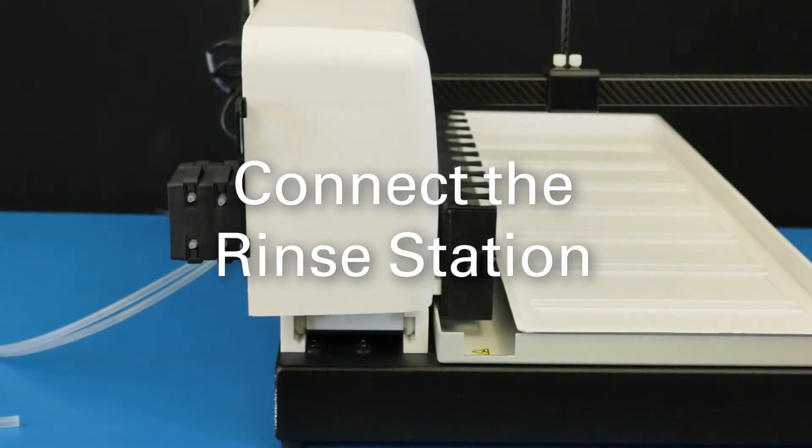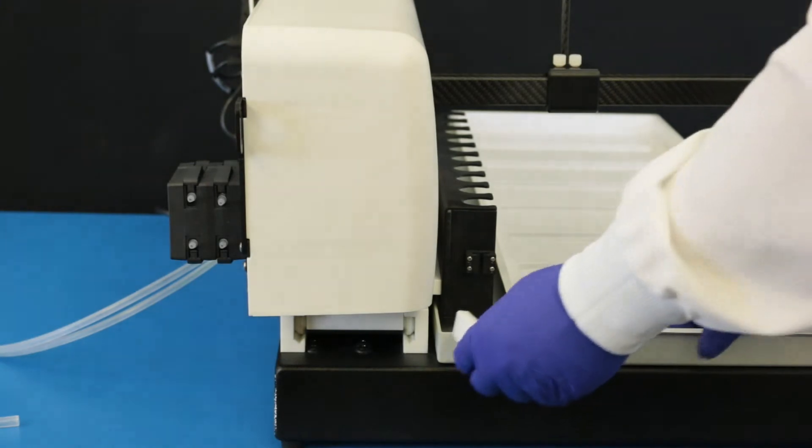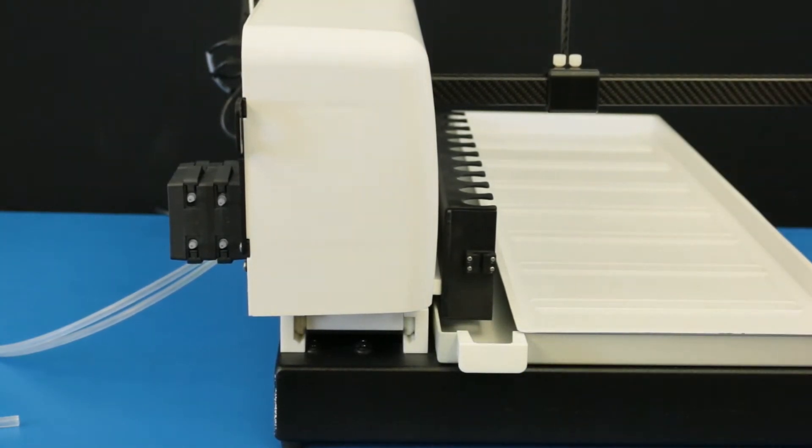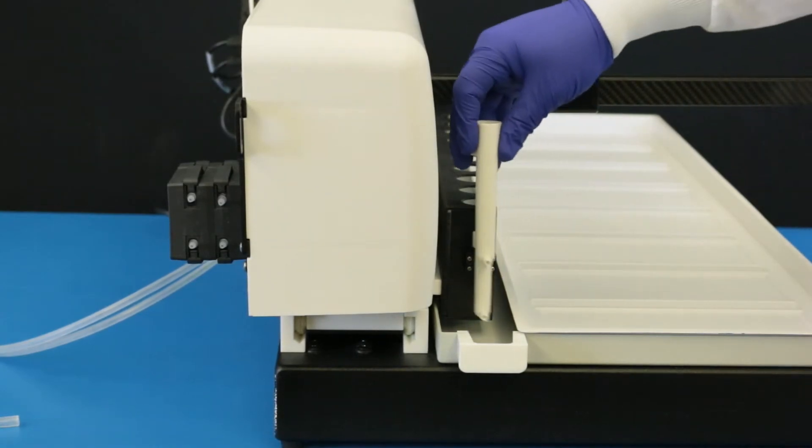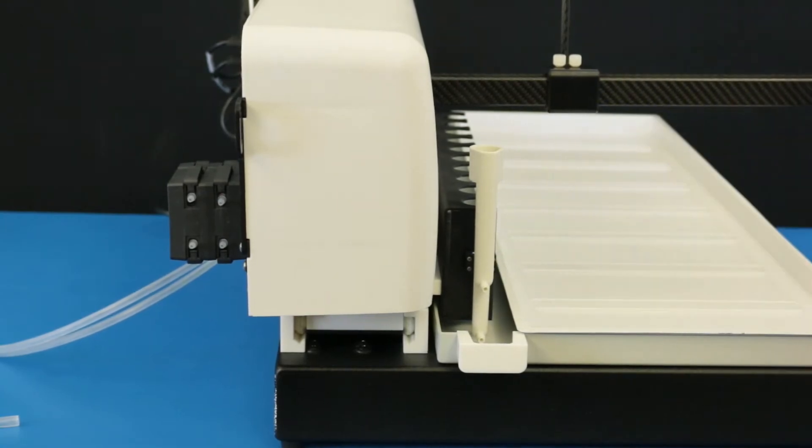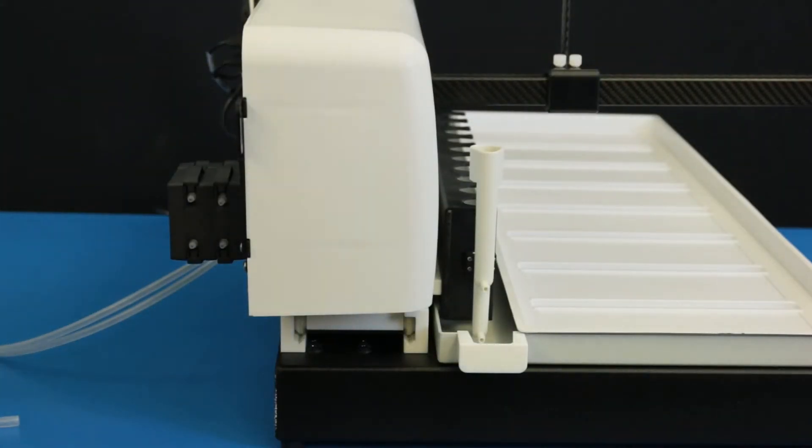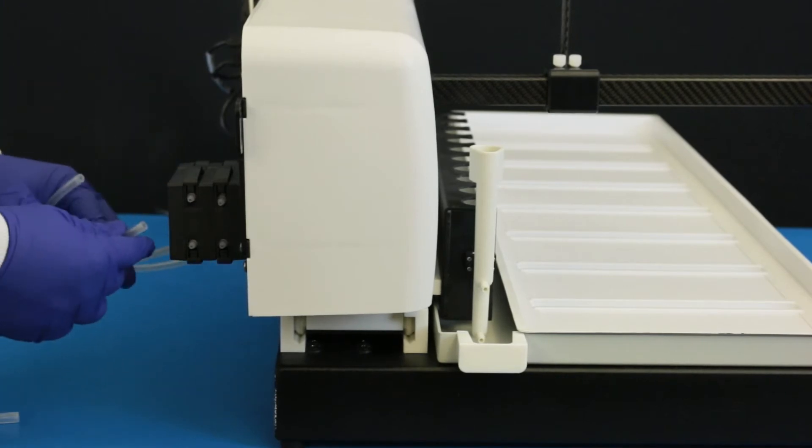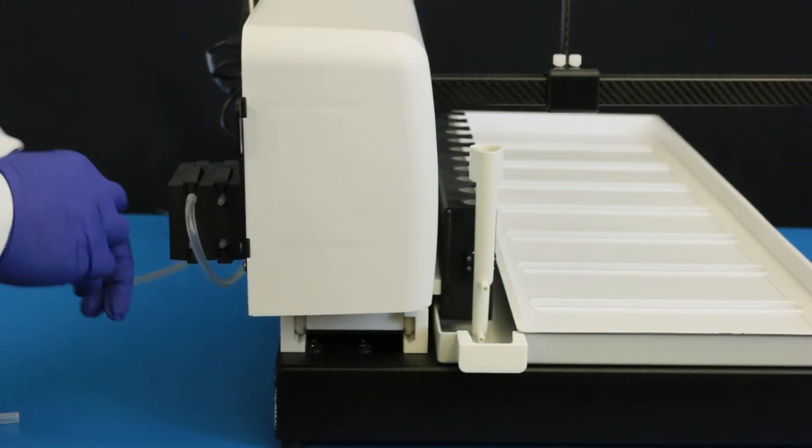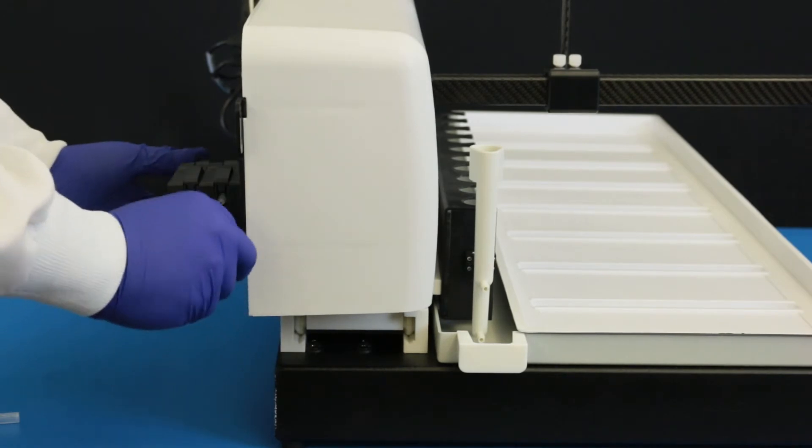Connect the rinse station. Install the rinse tubing block on the left edge of the Auto Sampler base. Press the rinse station into the mounting bracket. Locate the rinse source tubing and drain tubing. Connect the rinse source tubing to the top of channel 2. Connect the drain tubing to the bottom of channel 1.